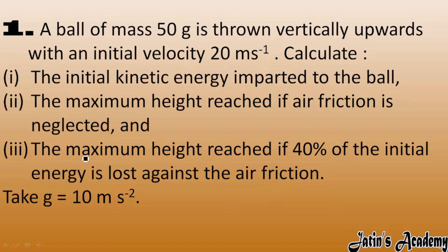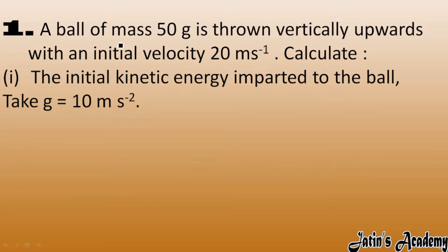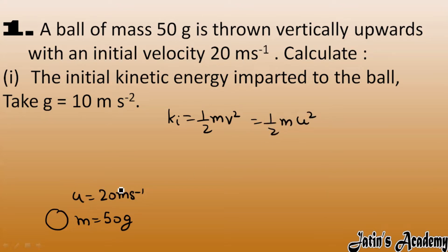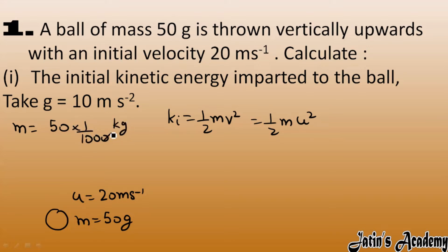Take G as 10 m/s². A ball of mass 50 grams is thrown vertically upward with an initial velocity of 20 m/s. We have to calculate the initial kinetic energy imparted to the ball. Mass is given in grams, so let's convert it to SI units — kilograms — by dividing by 1000. We get mass as 1/20 kilogram.